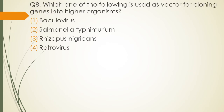Question 8. Which one of the following is used as vector for cloning genes into higher organisms? Options: Baculovirus, Salmonella typhimurium, Rhizopus nigricans, or Retrovirus? The correct answer is option 4 — Retrovirus.